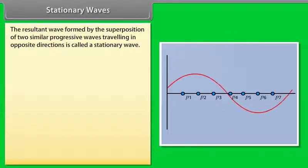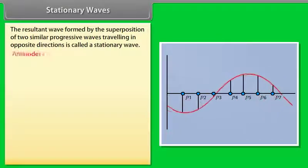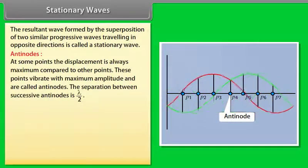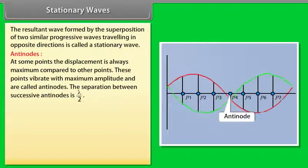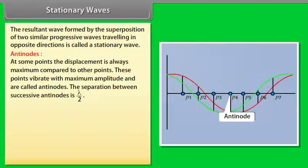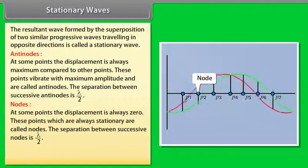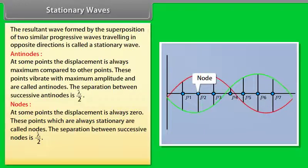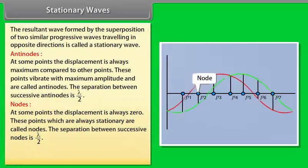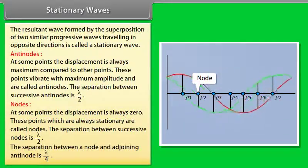Stationary waves: The resultant wave formed by the superposition of two similar progressive waves traveling in opposite directions is called a stationary wave. Antinodes: At some points the displacement is always maximum; these points vibrate with maximum amplitude and are called antinodes. The separation between successive antinodes is λ/2. Nodes: At some points the displacement is always zero; these points are called nodes. The separation between successive nodes is also λ/2. The separation between a node and an adjoining antinode is λ/4.